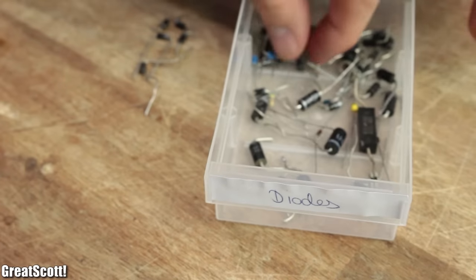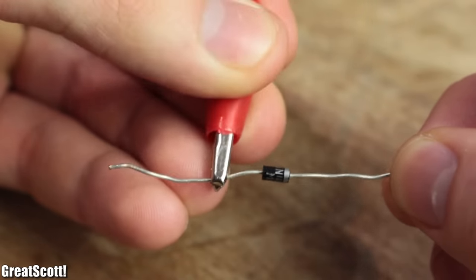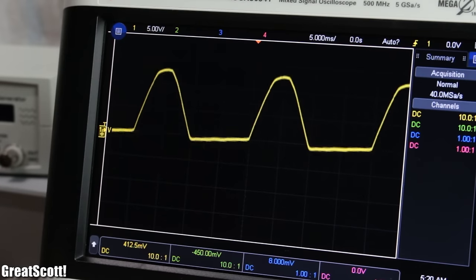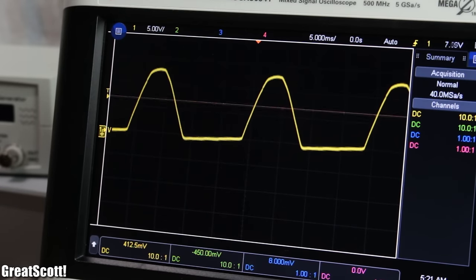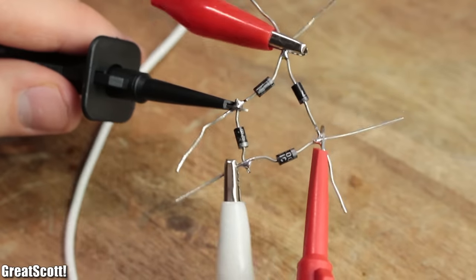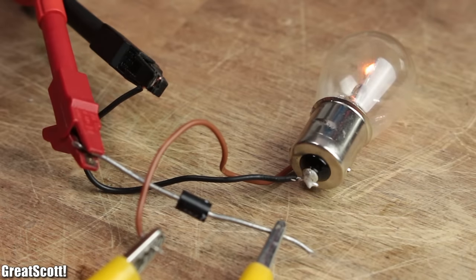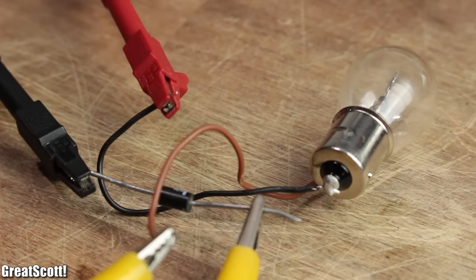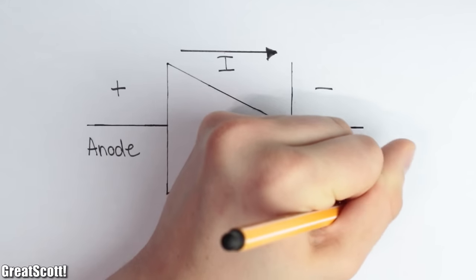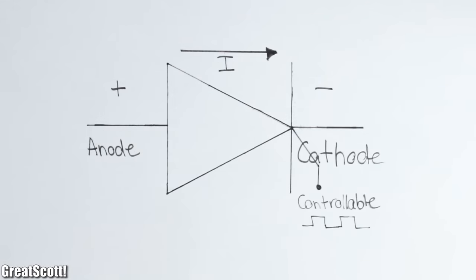In a previous video I showed you how useful diodes can be to convert alternating voltage into direct voltage with the help of a half-wave rectifier or even a full bridge rectifier. This is possible because a diode lets current flow in only one direction. But wouldn't it be useful to have a controllable diode that I can turn on and off whenever I want?